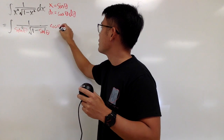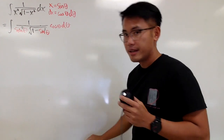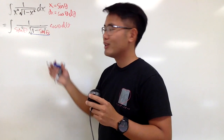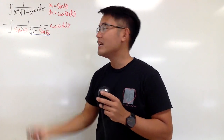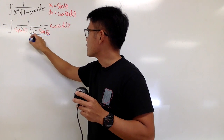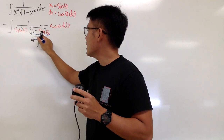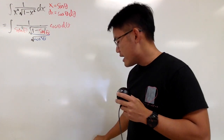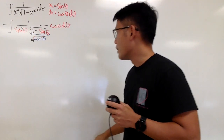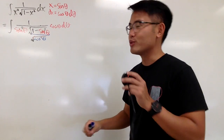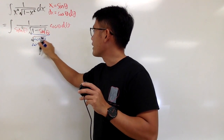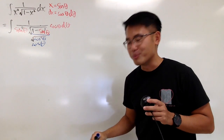Notice that 1 minus sine squared theta is just cosine squared theta, so the square root becomes the square root of cosine squared theta. We cancel the square and the square root to get cosine theta. You don't have to worry about the absolute value for integration purposes — just put down cosine theta. Only worry about absolute value when you have limits of integration.